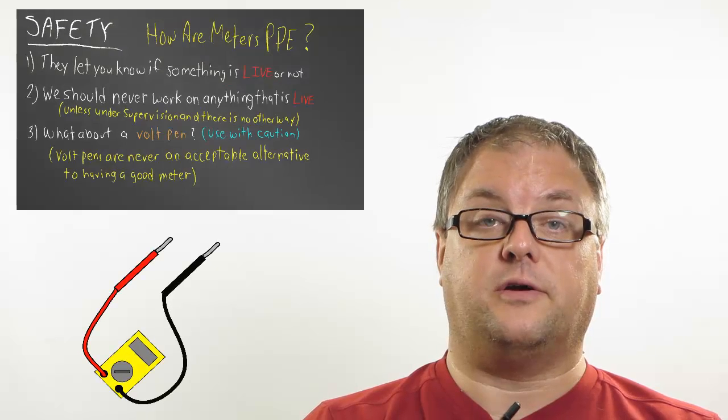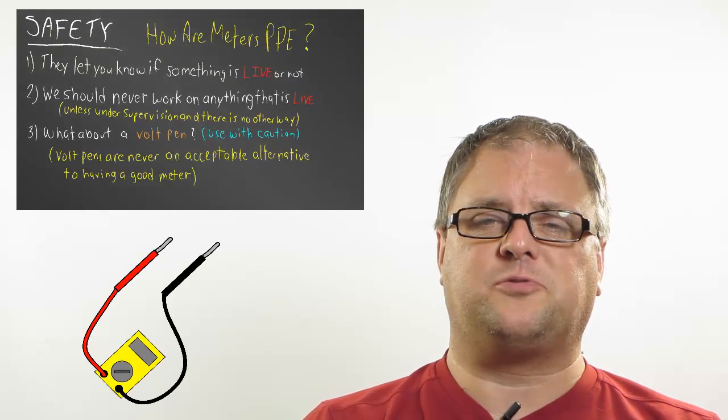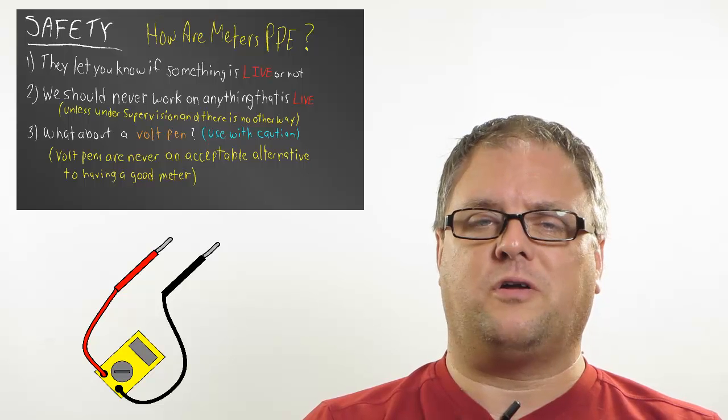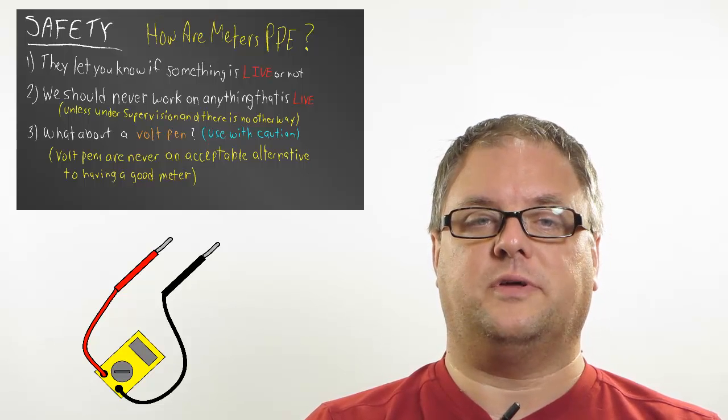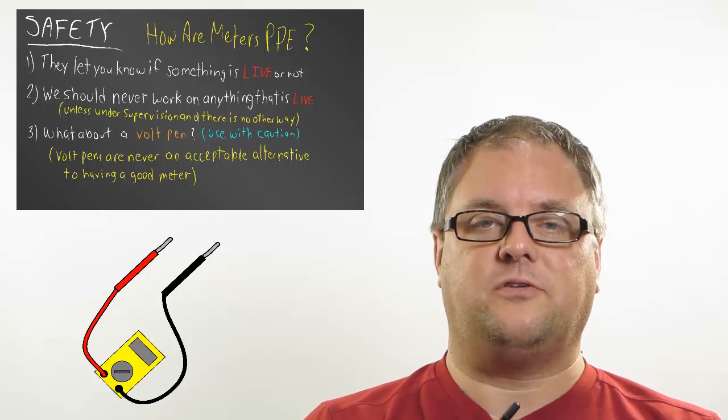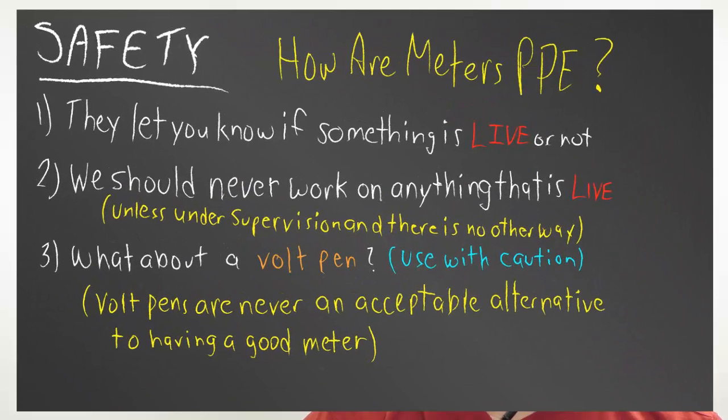There's one piece of gear that you, as an electrician, should have in your personal protective equipment arsenal. What is it? It's a good meter. I know sometimes we don't think about meters as being part of our protective equipment, but what can it do for you? Well, the first thing it can do is tell you if something is live or not, and that's really important because we are never to work on anything that is live, especially as an apprentice.